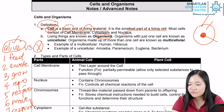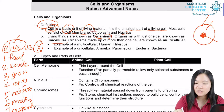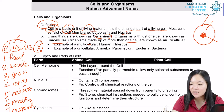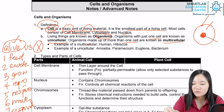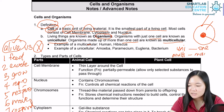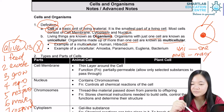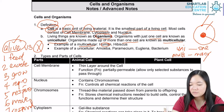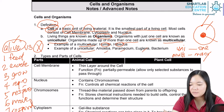Organisms with just one cell are known as unicellular; organisms made up of more than one cell are known as multicellular. 'Uni' means one cell, 'multi' means many cells. Examples of multicellular organisms include humans, animals, and plants like hibiscus. Unicellular organisms include amoeba, paramecium, euglena, and bacterium — each made up of just one cell.